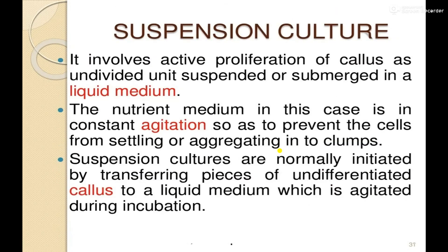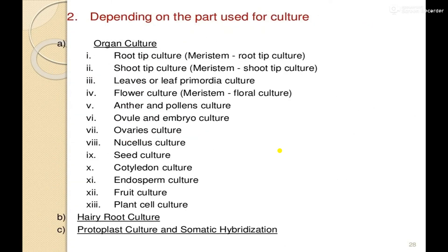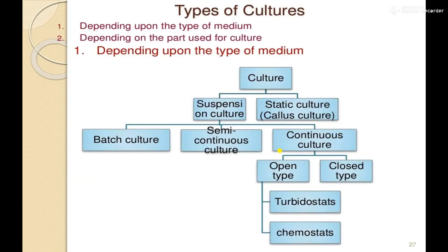To summarize the types of cultures based on the type of medium: cultures are subdivided into suspension culture and static culture (callous culture). Suspension cultures are divided into three types: batch culture, semi-continuous culture, and continuous culture. Continuous culture has two types — open type and closed type — and under open type there are two subtypes: turbidostats and chemostats.